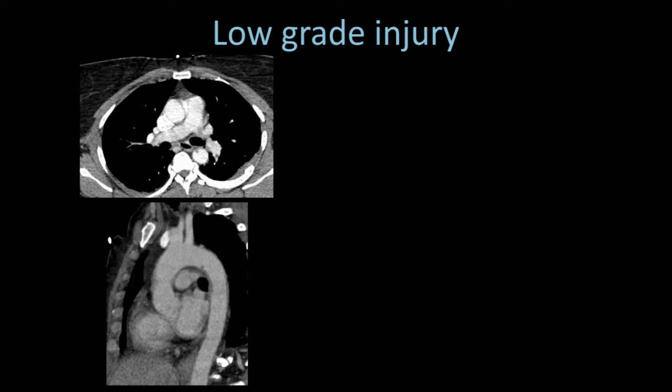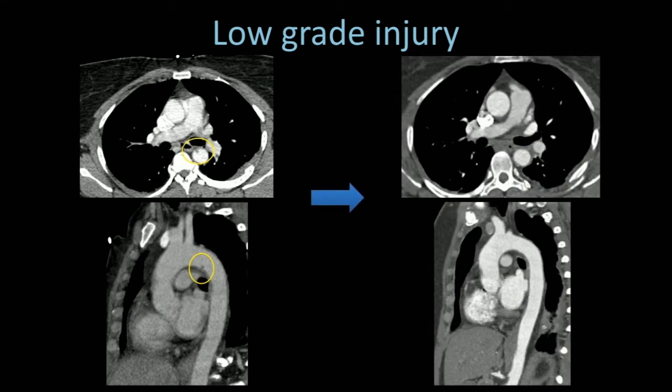What do we do with low-grade injuries when we don't intervene? We follow them. Patient has a small thrombus at the level of their isthmus. We followed them up over the next 48 hours, then week, then one month, then six months, and one year. This patient's aortic injury actually resolved at the one-week point.